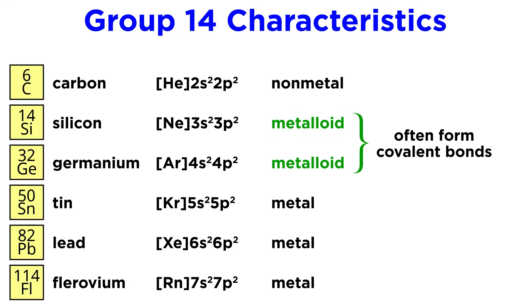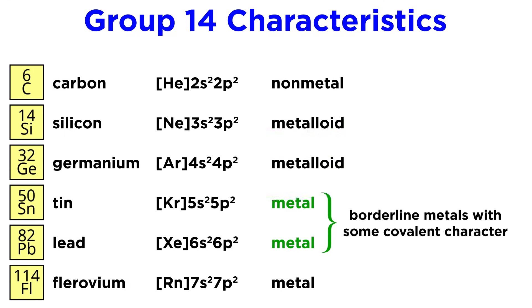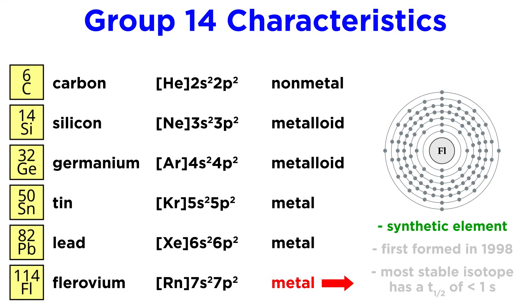Silicon and germanium, on the other hand, are both metalloids that often form covalent bonds, while tin and lead are borderline metals that have significant covalent character. Flerovium, like nihonium from the previous tutorial, is a synthetic transactinide element that was first formed in 1998.